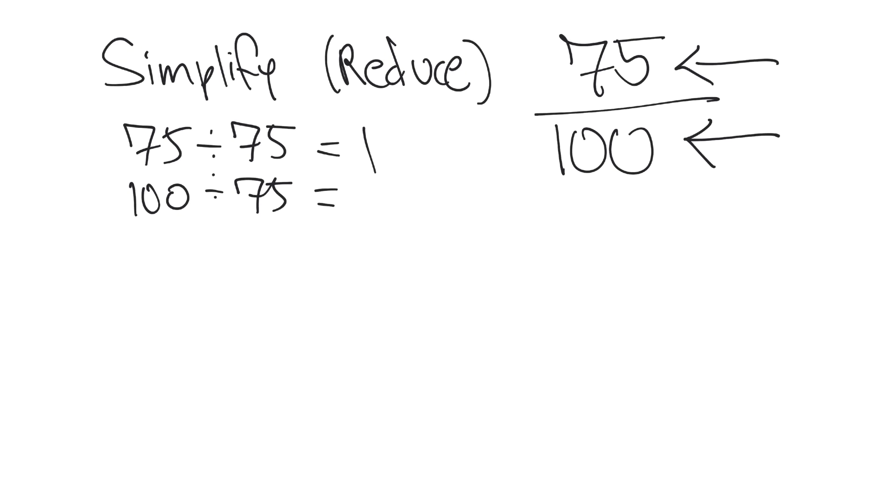But some of you might be able to immediately see that 25 will work, right? Because 25 goes into both 75 and 100. So if you're bright like that, you'll see that 75 divided by 25 equals 3, and 100 divided by 25 equals 4. So that's the most reduced our fraction can get.